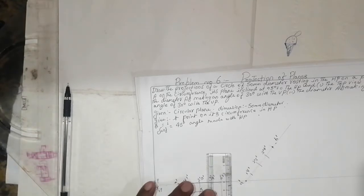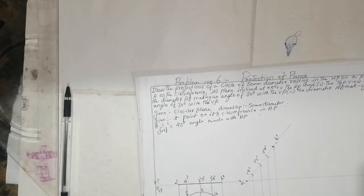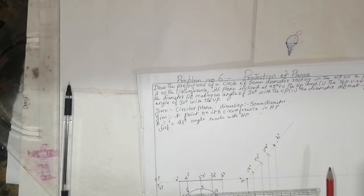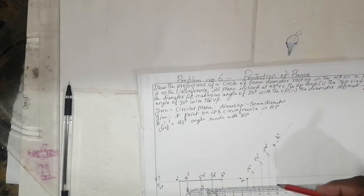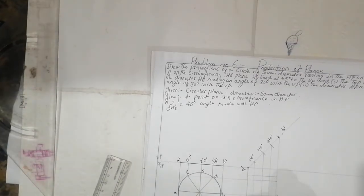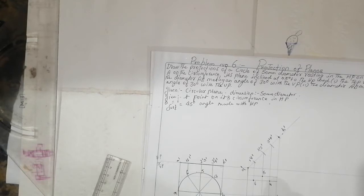After cutting the arc, draw projection lines. See here points 2, 3, 1, A, B, 4, 6, and 5. This is A, this is B — don't be confused. This is B, A6, A5, A4, A1, A2, and A3.